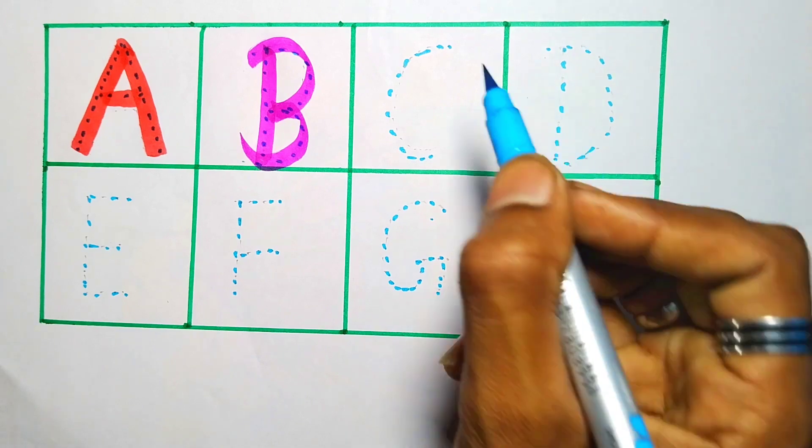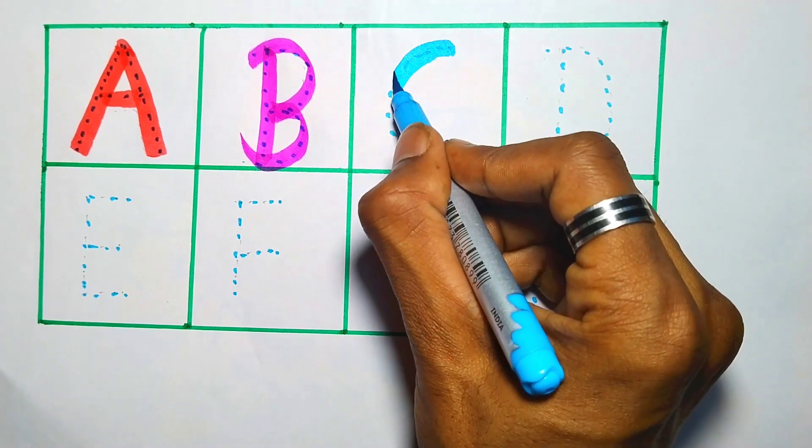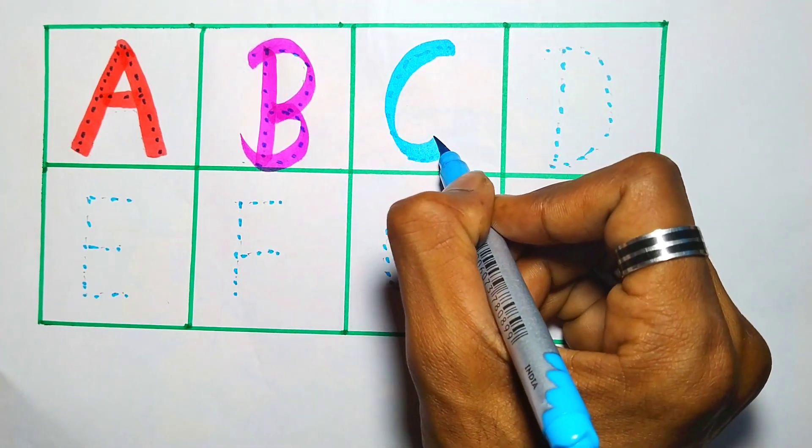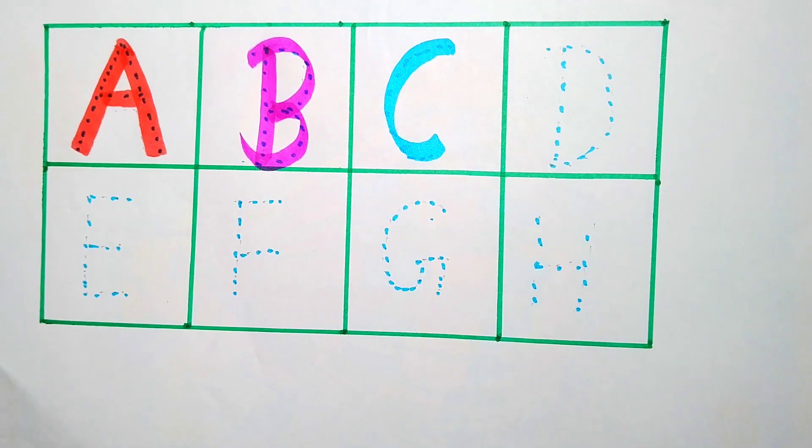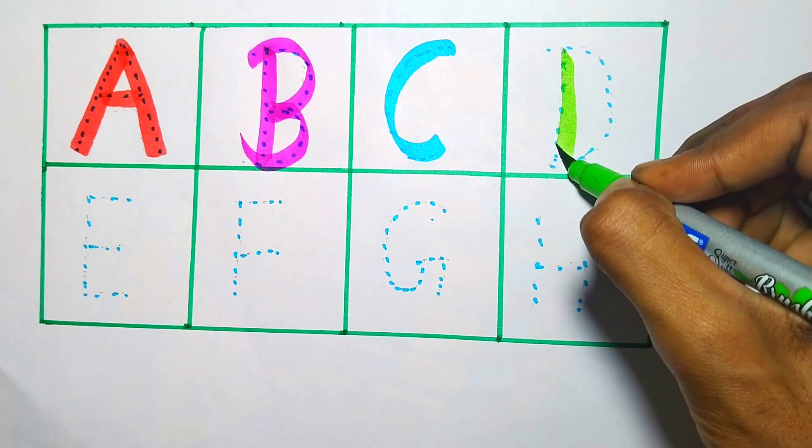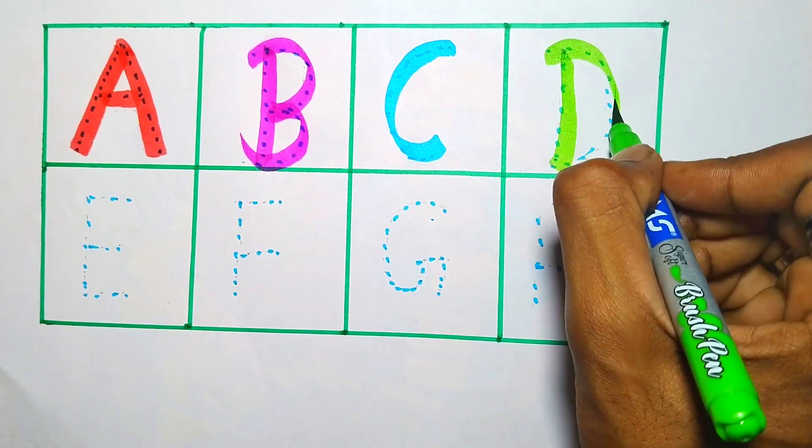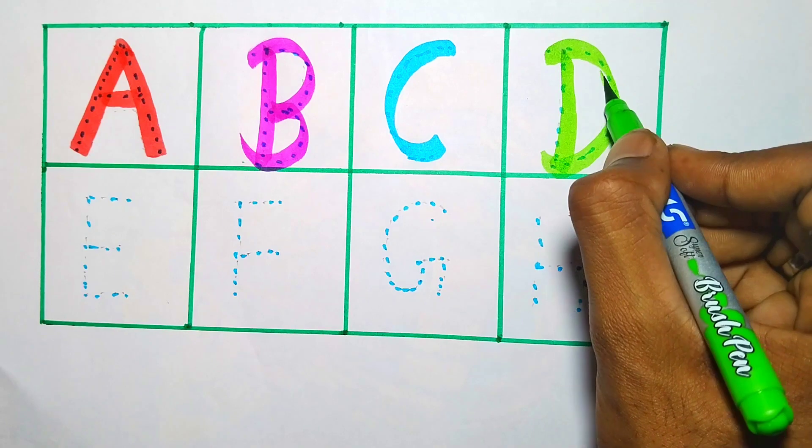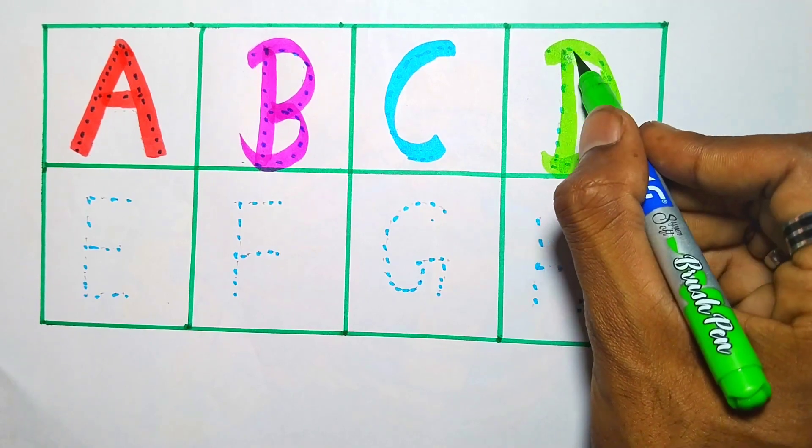Sky blue color. C, C for cat. Light green color. D, D for dog. D, D for dog.